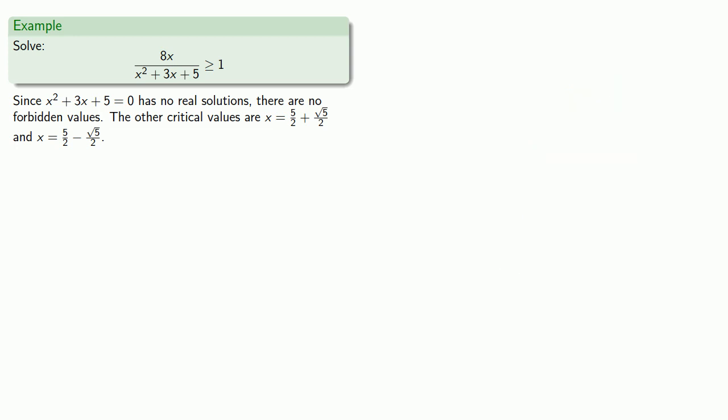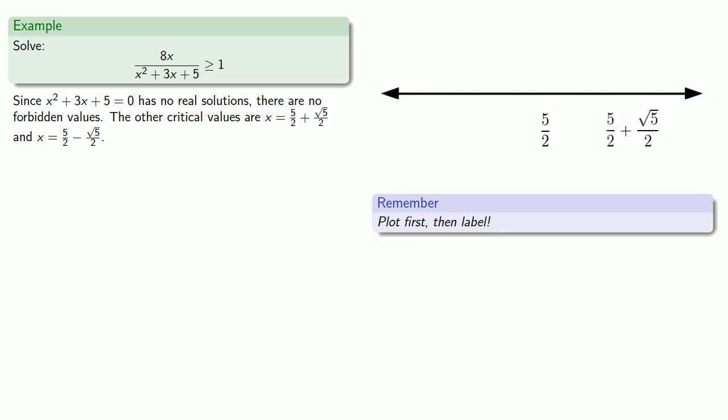When we graph, it'll be useful to recognize that our critical values are 5 halves plus some amount and 5 halves minus some amount. So it's useful to remember to plot first, then label. So 5 halves is somewhere, and we're going to go 5 halves plus a little bit and 5 halves minus a little bit.